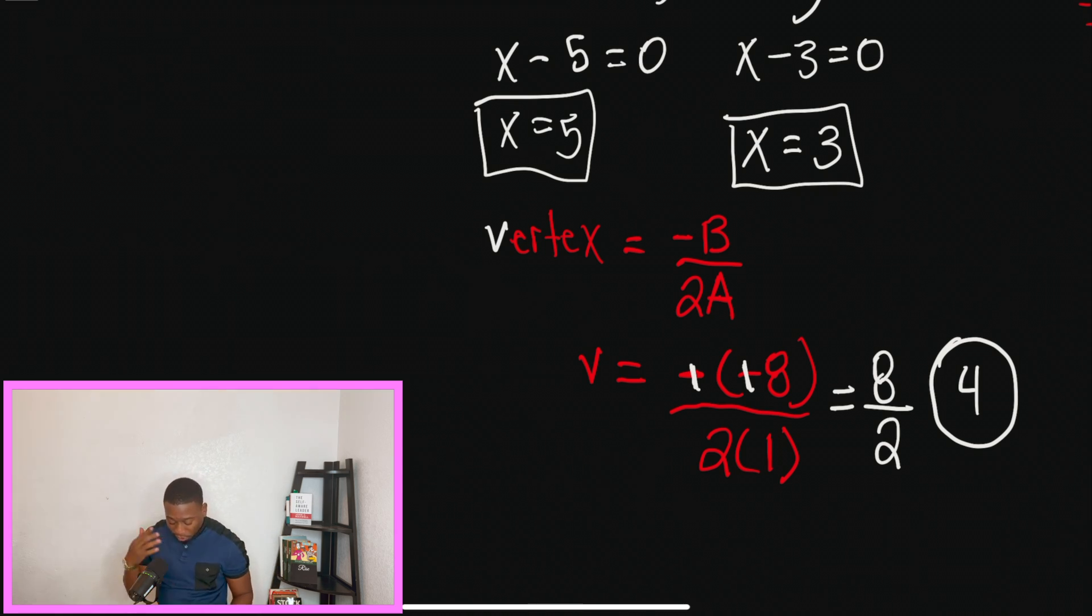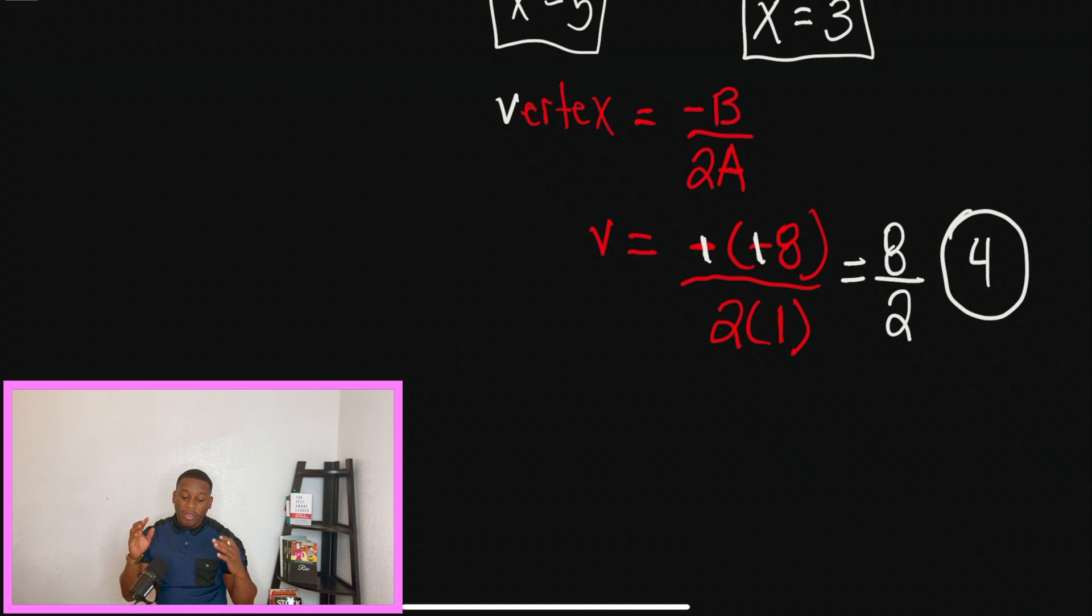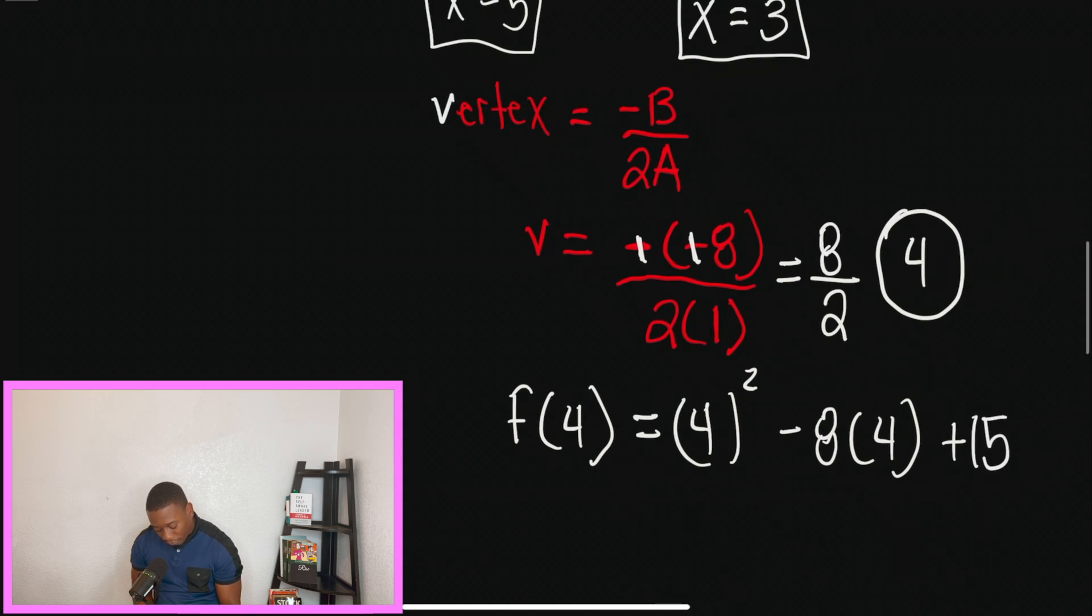How do we find this y value? Mr. Peters got you. So this is what we do. We take our answer from the vertex, and that answer we're going to plug it back in and solve. So what we're saying is, f(x), when x is 4, what is going to be my output?